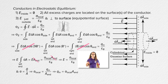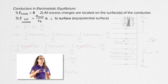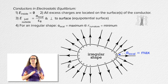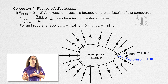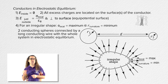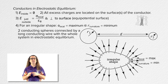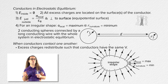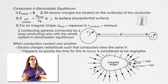The last of the four things you need to remember about conductors in electrostatic equilibrium is that for an irregular shape, the local surface charge density is at its maximum where the radius of curvature is at its minimum. In other words, the largest number of excess charges per area will be where the radius of curvature is the smallest. To prove this, we have two conducting spheres connected by a long conducting wire with the whole system in electrostatic equilibrium. When two conductors are brought into contact with one another, the charges redistribute such that both conductors are at the same electric potential. Please realize this happens so quickly that the time for this to occur is considered to be negligible.